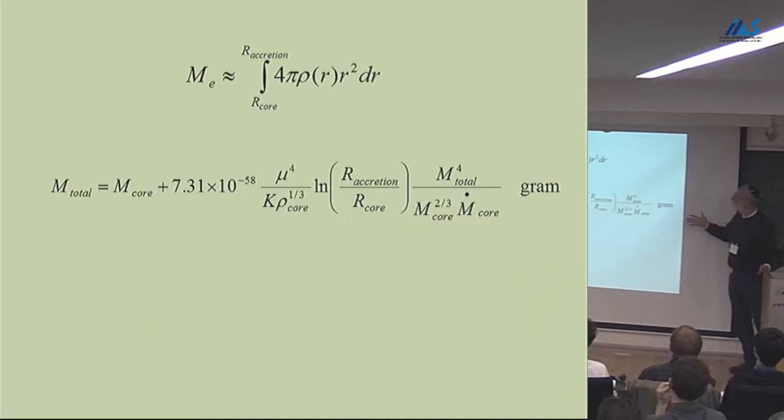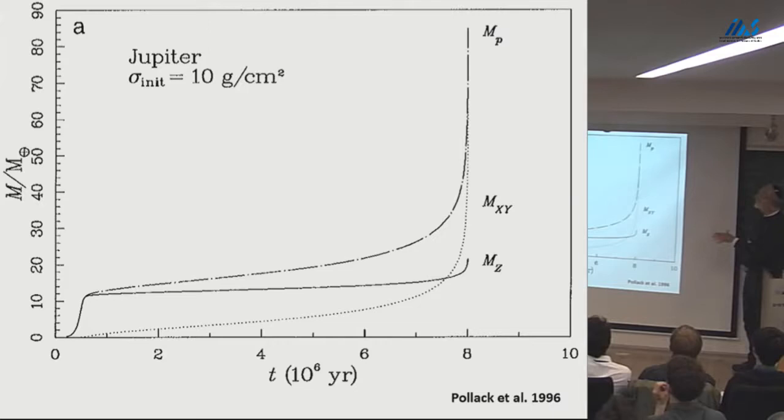This is what Dave described, and this is a very close approximation to what you need. When this turns over, you get the critical core mass. As I showed you, it's about 10 Earth masses.